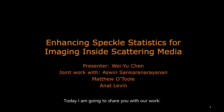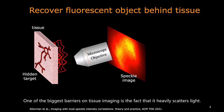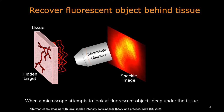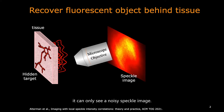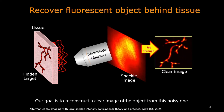Today, I'm going to share with you our work on enhancing speckle statistics for imaging inside scattered media. One of the biggest barriers in tissue imaging is the fact that it's heavily scattered. When a microscope attempts to look at fluorescent objects deep under the tissue, it can only see a noisy speckle image. Our goal is to reconstruct a clear image of the object from this noisy one.